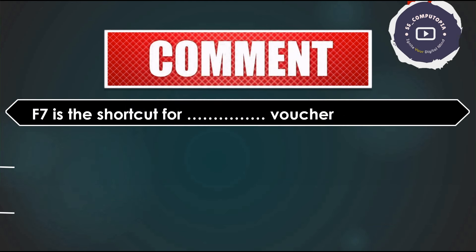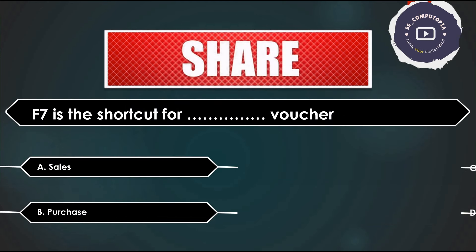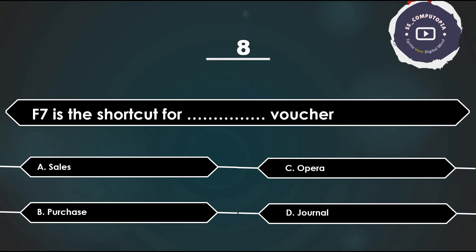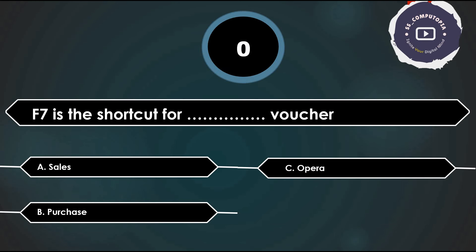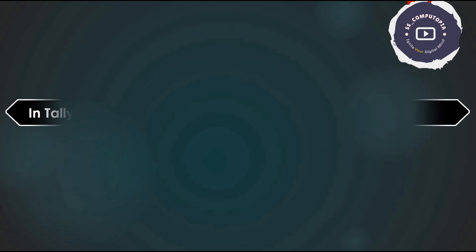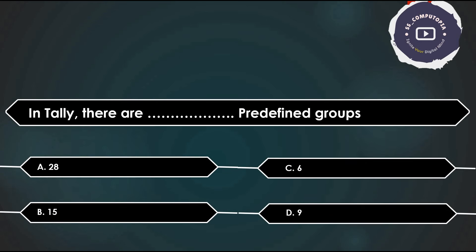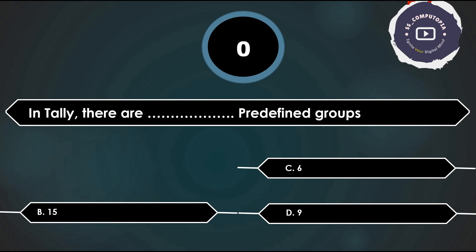F7 is the shortcut key for — voucher, sales, purchase, or journal? Answer is Journal. In Tally there are how many predefined groups — 28, 15, 6, or 9? Answer is 28.